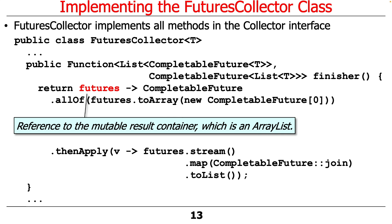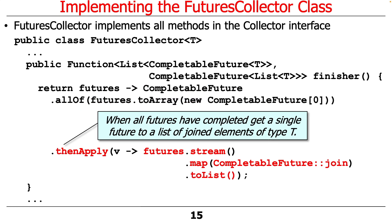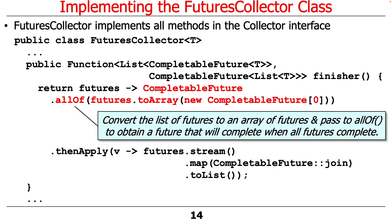There's a variable called 'futures' representing the mutable result container that FuturesCollector uses to accumulate results. A lambda expression uses the allOf arbitrary-arity method to take the futures list, convert it to an array of the appropriate type. This somewhat awkward syntax is just what you have to do in Java to convert a list to an array. It's another reason why you want to hide this accidental complexity behind a nice wrapper interface.